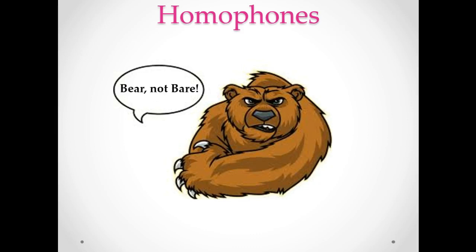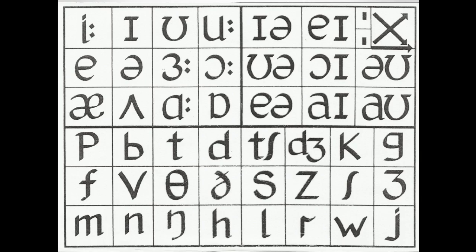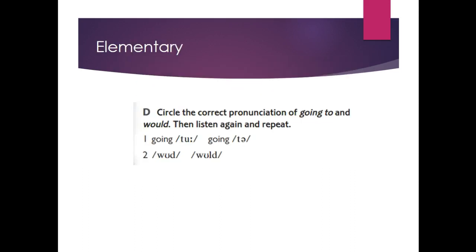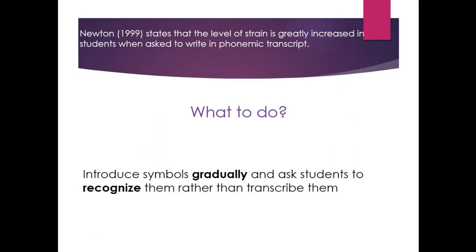Homophones are also useful — for example 'bear/bare,' 'there/their/they're.' For teaching the phonemic symbols, these are like a new alphabet for a lot of learners. Some textbooks have exercises for teaching the symbols gradually. As Newton states, the level of strain is greatly increased when students are asked to write in phonemic transcription, so introduce symbols gradually and ask students to recognize them rather than transcribe them. If students learn to recognize the sounds, their pronunciation will immediately improve.